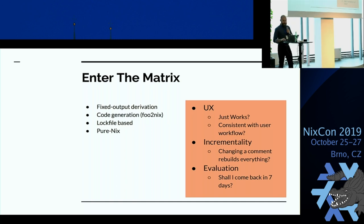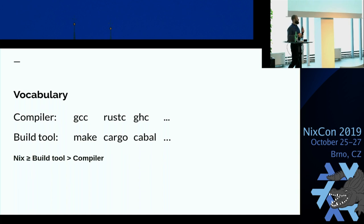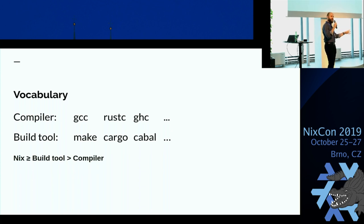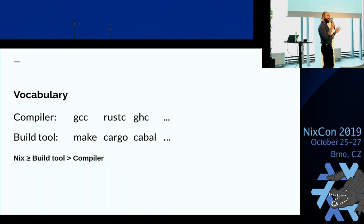Let's cover vocabulary first. We're going to talk about compilers and build tools. The compiler is the thing that actually compiles your code — something you can't get away with. The build tool is the thing that puts the pieces together, calls the compiler, and forwards build outputs. Sometimes you can actually get rid of the build tool in Nix. The compiler is something you never want to reimplement in Nix, whereas the build tool — as we'll see — it's possible, even though it might not be nice.